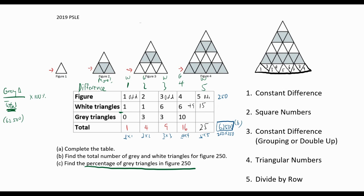If the figure is odd, there are more white triangles. If the figure is even, there are more grey triangles. Figure 250 is even, so there are more grey triangles. Since we know the total and the difference for figure 250, we can find the number of grey triangles by taking 62,500 plus 250 divided by 2, which also gives us 31,375.